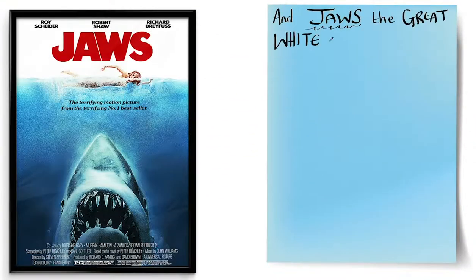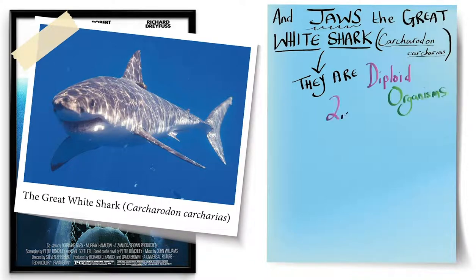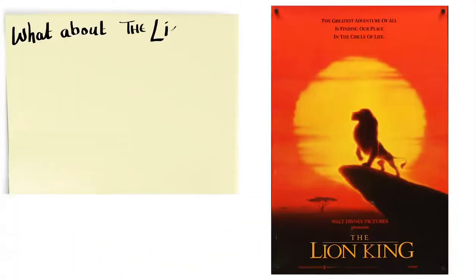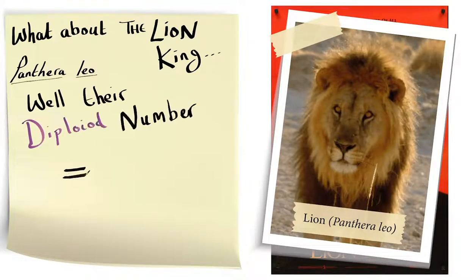And Jaws, the great white shark, Carcharodon carcharias, they are diploid organisms and their diploid number is 82. And what about the lion king, Panthera leo? Well, their diploid number 2n equals 38.